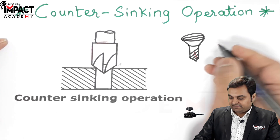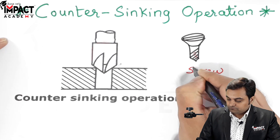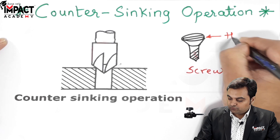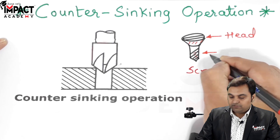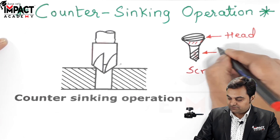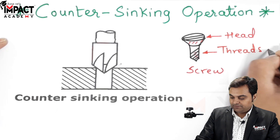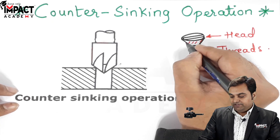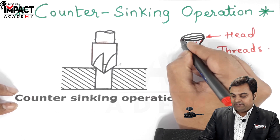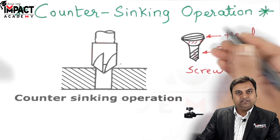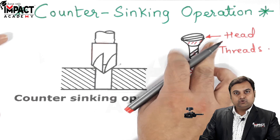Here this is a diagram of a simple screw. This is the head of the screw and here it contains the threaded part, that is the threads. Now we need to provide an angular surface because the head is conical, as we see here, inclined at an angle.